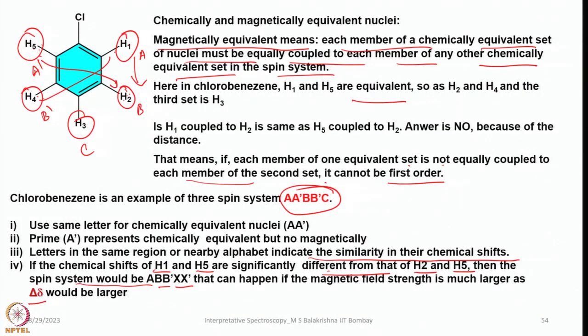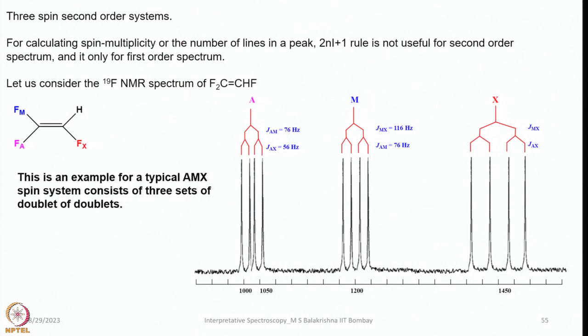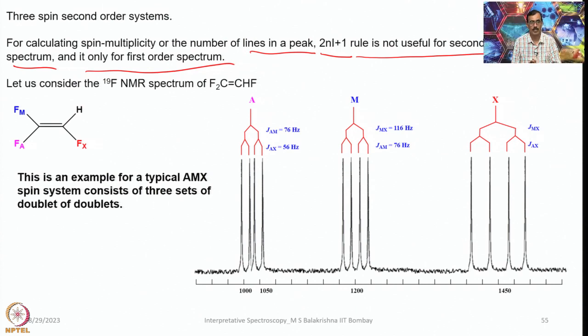When we designate nuclei as AA'BB'C, A and A' are chemically equivalent but not magnetically equivalent — one should remember that. Now let us look into the three-spin system. For calculating spin multiplicity or the number of lines in a peak, the 2NI + 1 rule is not useful for second order spectra — it is only for first order spectra. This rule, along with Pascal's triangle, holds good only for first order spectra; in second order spectra, we cannot use this rule at all.